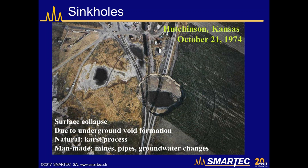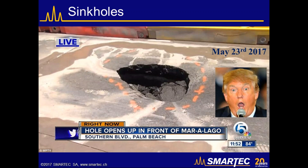In the picture you can see an example of a large sinkhole that formed in Kansas in October 1974 and it affected a railway line. The ground collapsed and the rails were hanging in the air — obviously a very dangerous situation. A more recent case is a smaller sinkhole that opened in front of President Trump's estate at Mar-a-Lago in Florida.